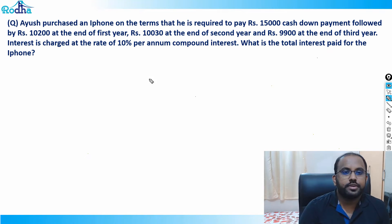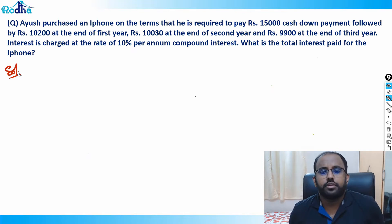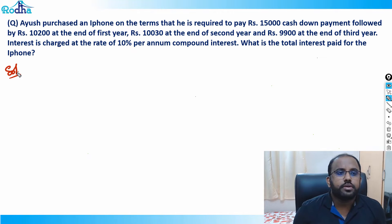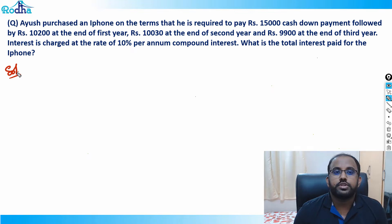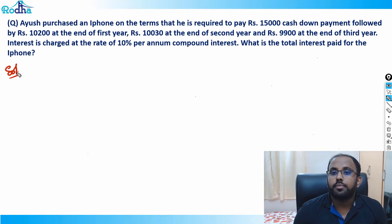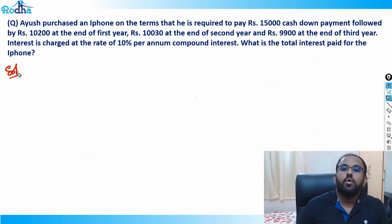Let's look at this question about interest installments. We'll be learning the ratio method for this. The question says that I purchased an iPhone on the terms that he is required to pay rupees 15,000 cash down payment, followed by rupees 10,200 at the end of first year, rupees 10,030 at the end of second year, and rupees 9,900 at the end of third year. Interest is charged at the rate of 10 percent per annum compound interest. What is the total interest paid for the iPhone?